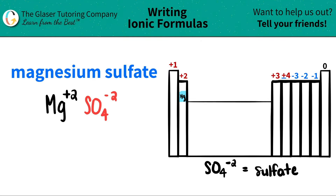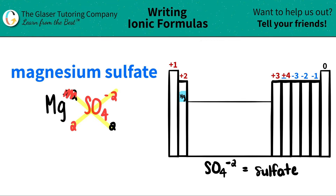Since I have both components, we do this little trick where we take the charges and we crisscross them down to just get the number of each component that I need. So this plus 2 crisscrosses down, telling me that I need 2 sulfates, and then this negative 2 crisscrosses down, telling me that I need 2 magnesiums. When you do this crisscrossing, don't worry about the charges — they kind of go bye-bye. We're just using them as counting numbers.